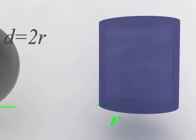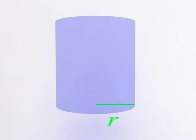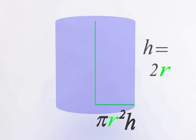The same radius, r, is used to construct a cylinder. Like the cone and sphere, the height equals the diameter, or two times the radius. When this happens, the equation for the cylinder simplifies to two pi r cubed.